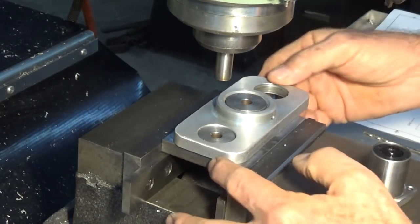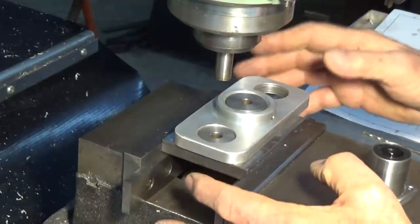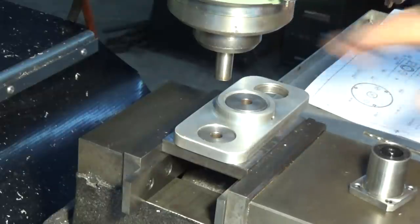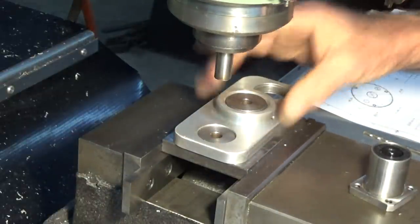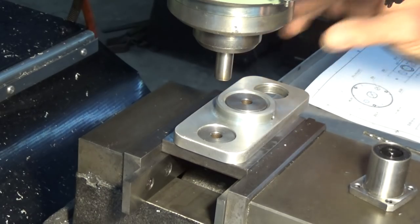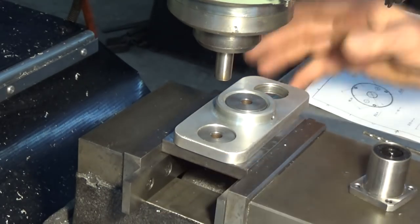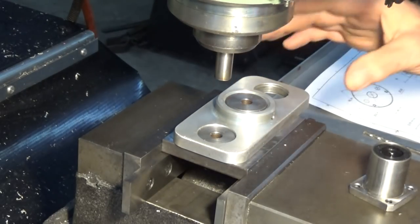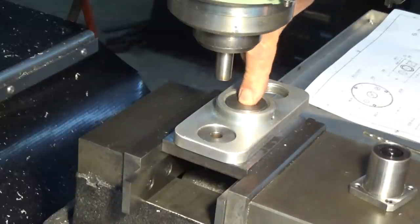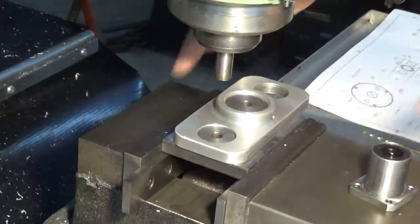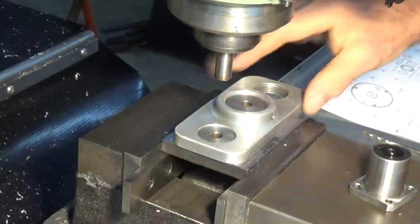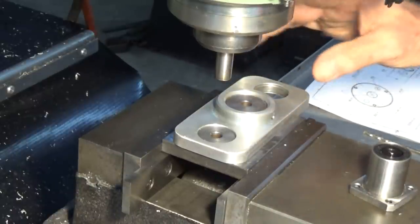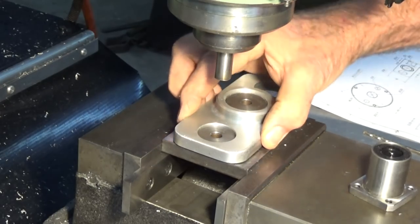Wouldn't it be ideal if I had a big, accurate rotary table? It would save all this messing around. But at present, I don't have one. I've got a small one, but it's not big enough to do this job here. I know a lot of you are probably looking at this and saying, what a rigmarole, just to index around 180 degrees. But that's the problem.